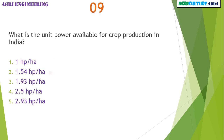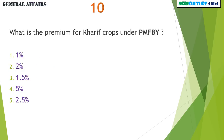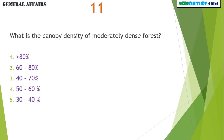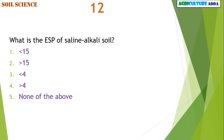What is the unit power available for crop production in India? 1.54 HP per hectare. What is the premium for Kharif crops under PMFBY? 2% for Kharif crops. What is the canopy density of moderately dense forest? 40 to 70%.